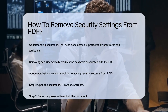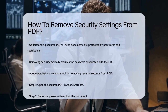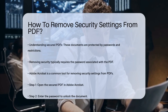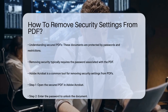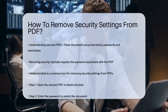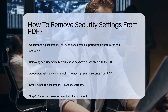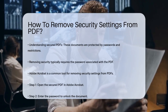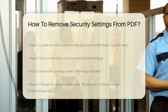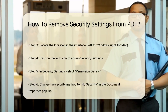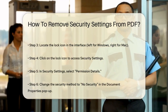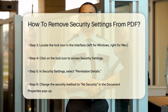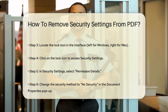One of the most common methods to remove security from a PDF is using Adobe Acrobat. Here's how you can do it. Open the PDF in Adobe Acrobat on your desktop. Type in the password to unlock the document. Look for the lock icon, usually found on the left side of the screen for Windows or the right side for Mac.